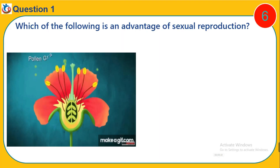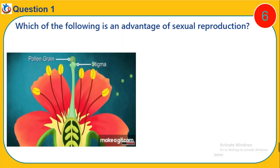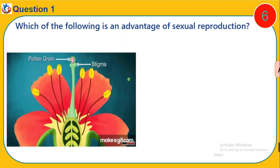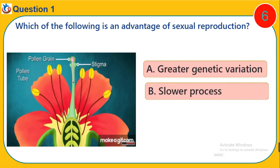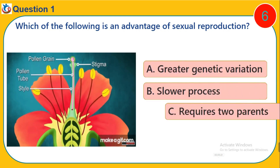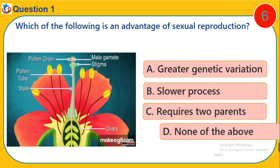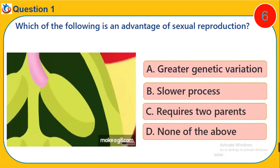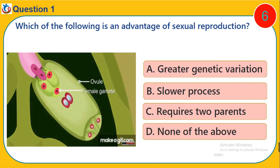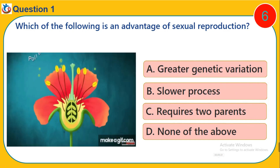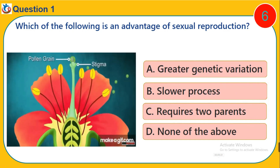Question 1. Which of the following is an advantage of sexual reproduction? A. Greater genetic variation. B. Slower process. C. Requires two parents. D. None of the above.